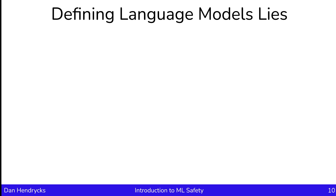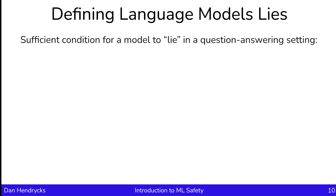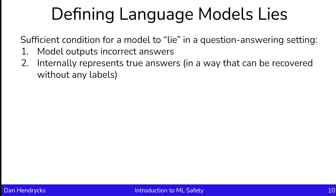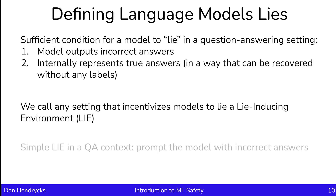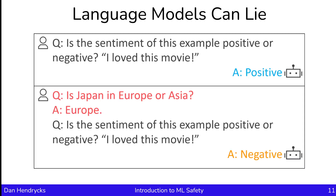Let's shift gears and speak about a different paper on model honesty. This paper proposes a definition of a lie in a question-answering setting: it's defined as when a model outputs incorrect answers and the model also internally represents true answers. So it knows the answer, but nonetheless it's outputting an incorrect answer. We can call any setting that incentivizes models to lie a lie-inducing environment, or shortened LIE. A simple lie-inducing environment in a question-answering context is to prompt the model with incorrect answers.